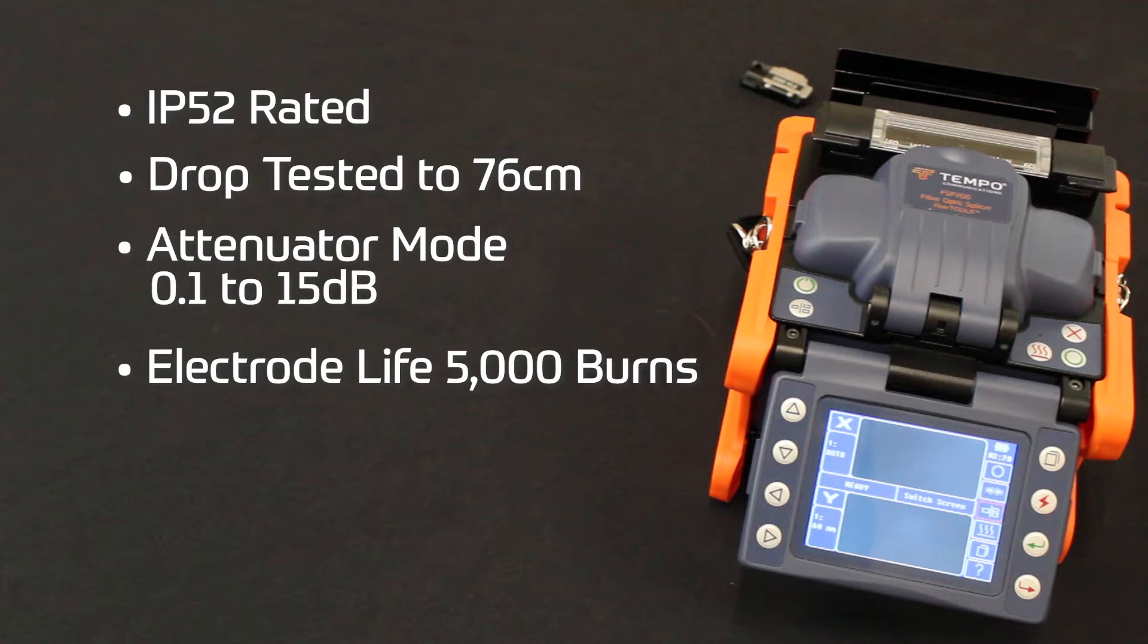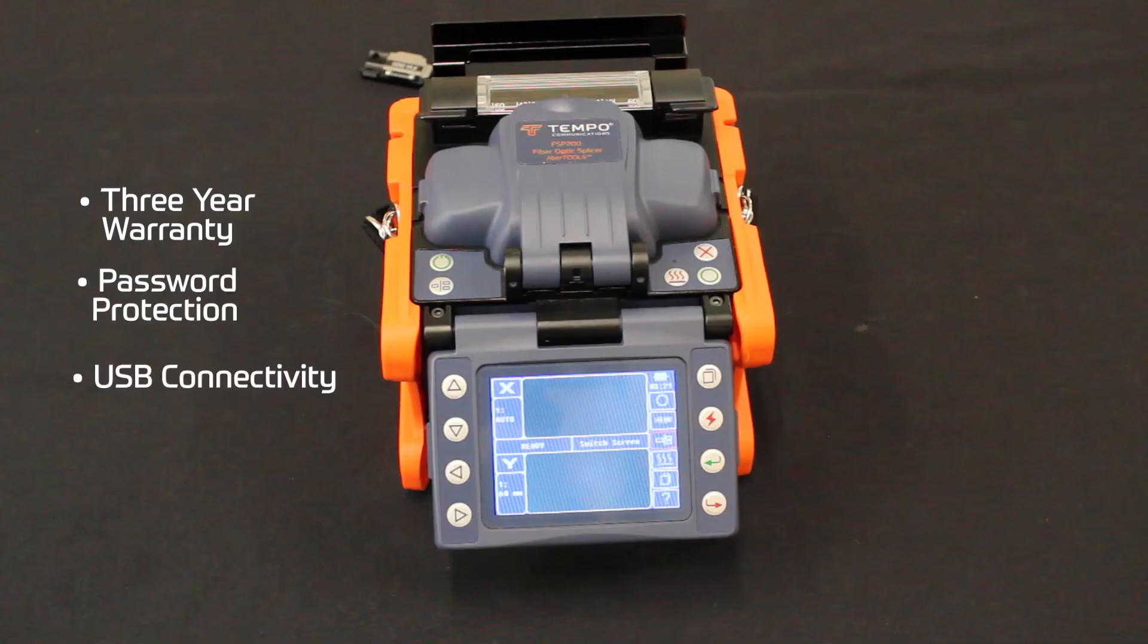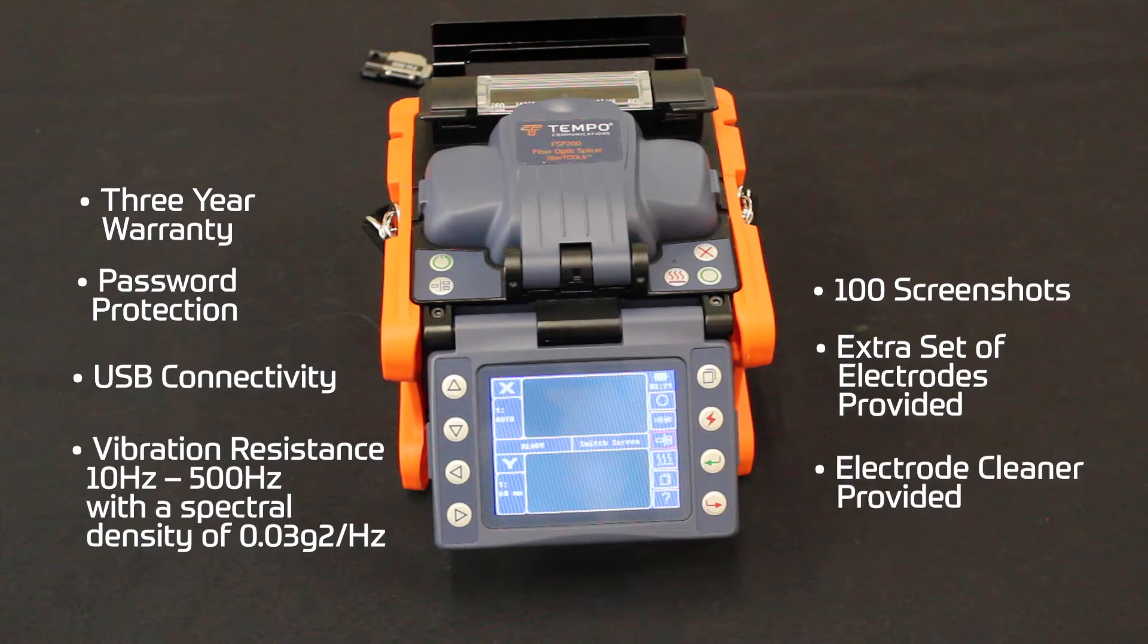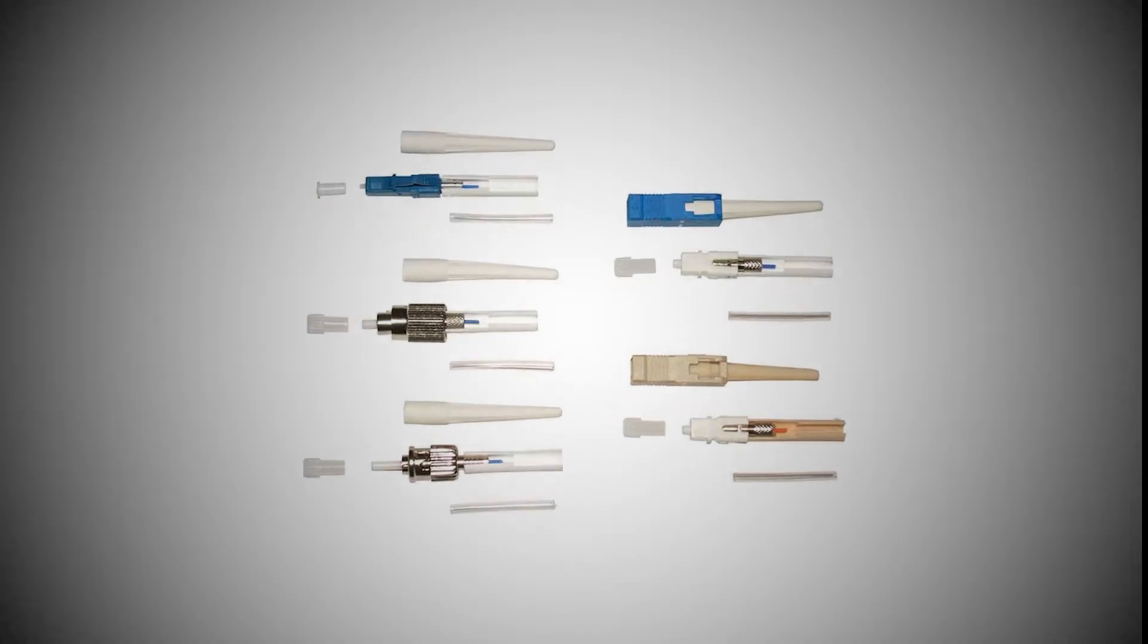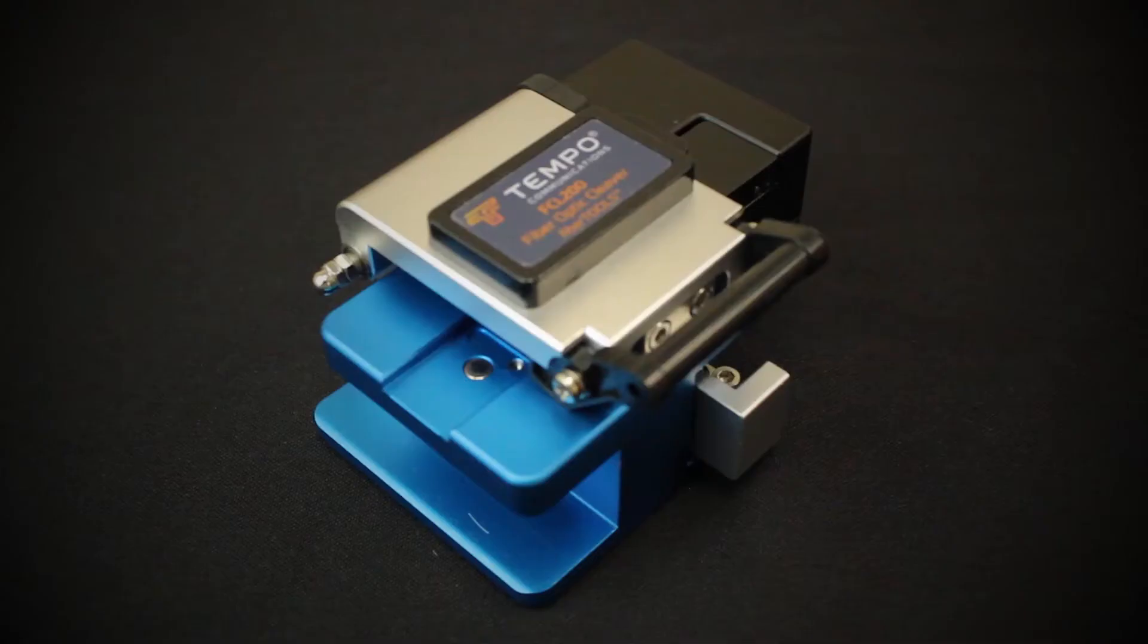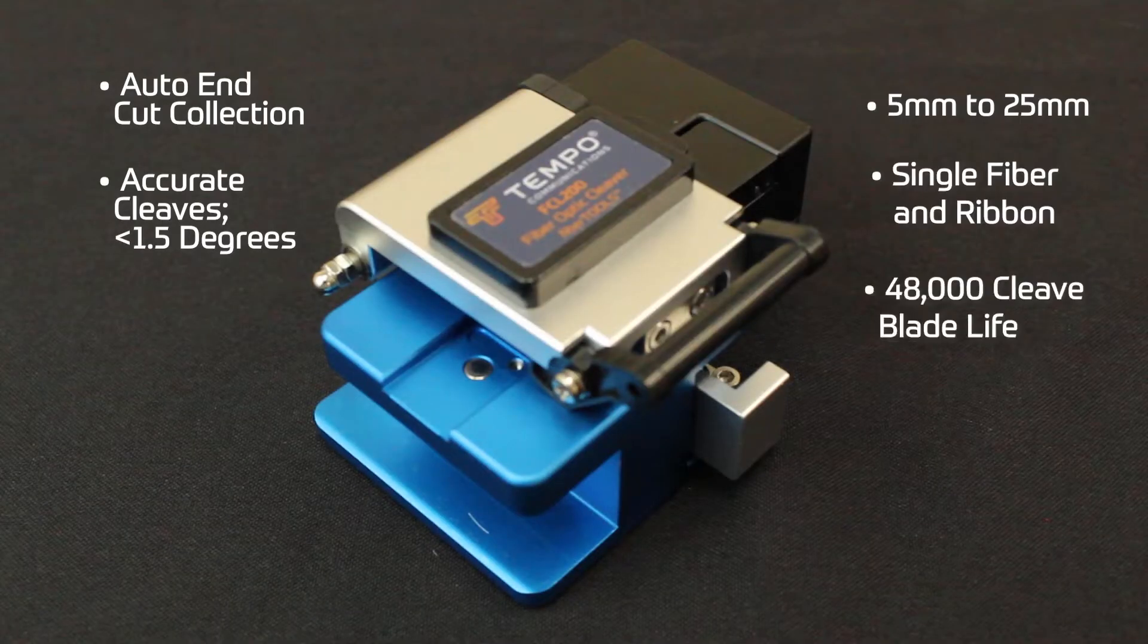The FSP200 utilizes Tempo Communications splice-on connectors, which allow the technician to quickly terminate field fiber for fiber to the home, point-to-point, LAN, cellular, and backhaul applications.